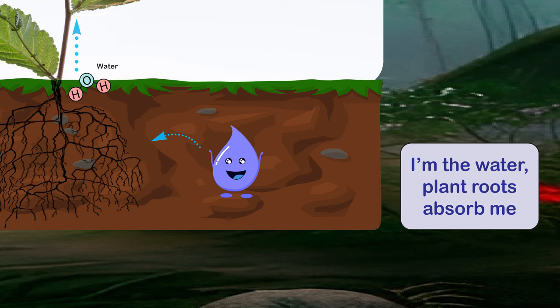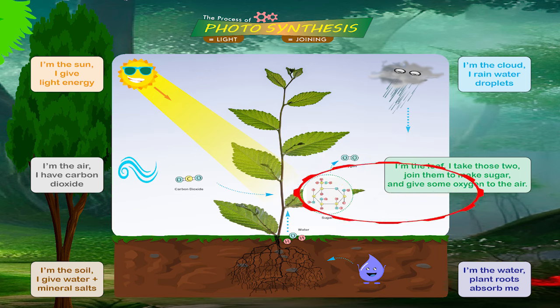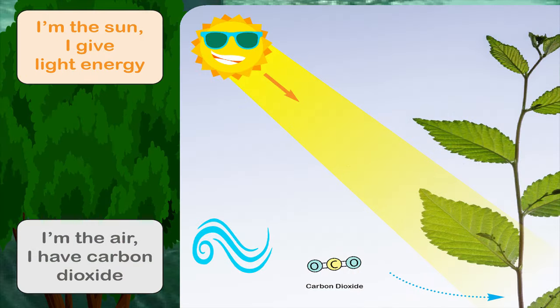The ground soil gets wet with rainwater, then plant roots will take this water upward to the stem and through branches to every leaf. Plant leaves will also take carbon dioxide from the air and light energy from the sun.